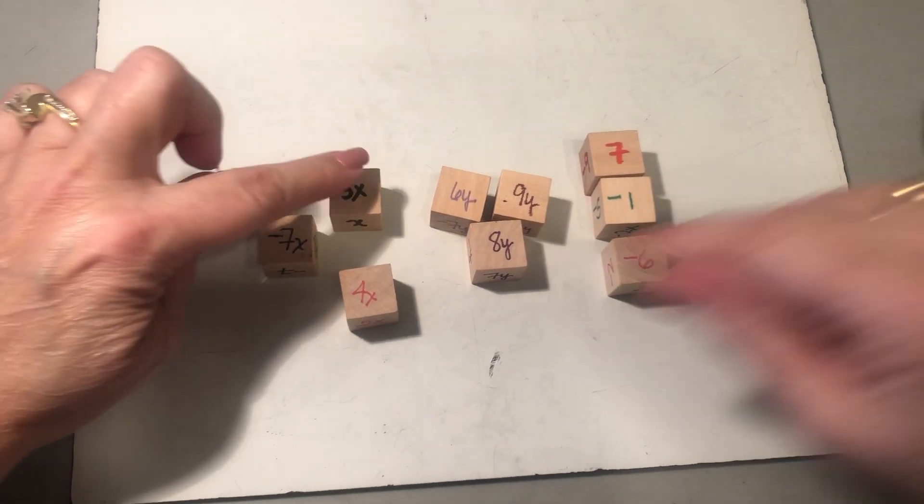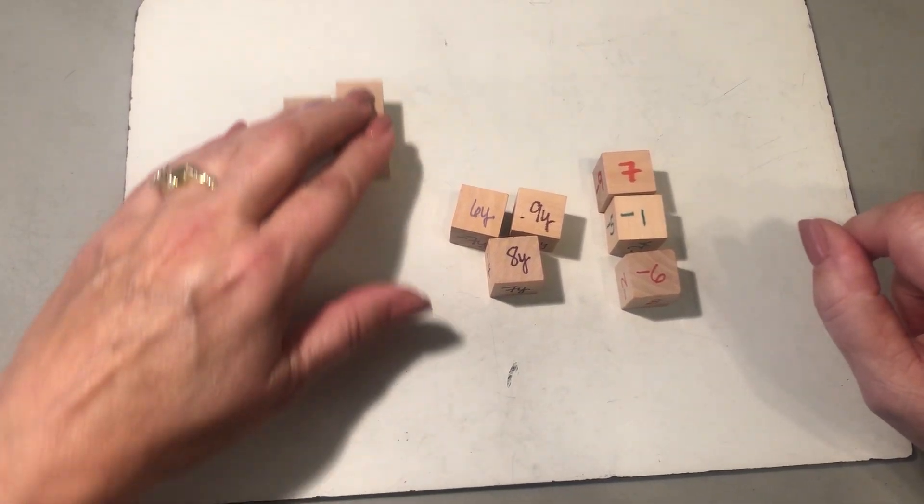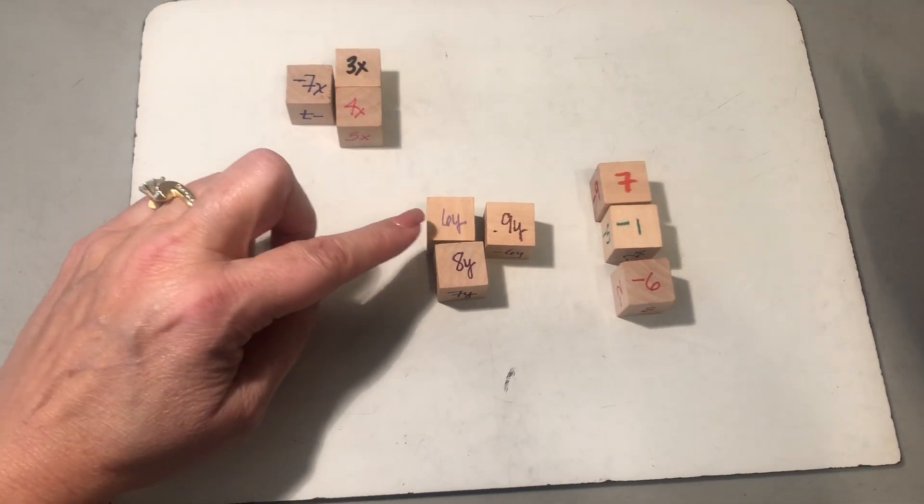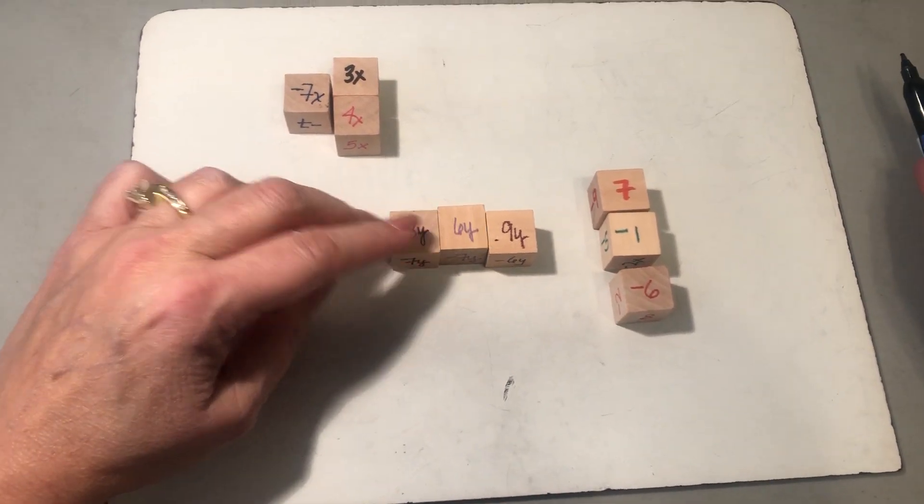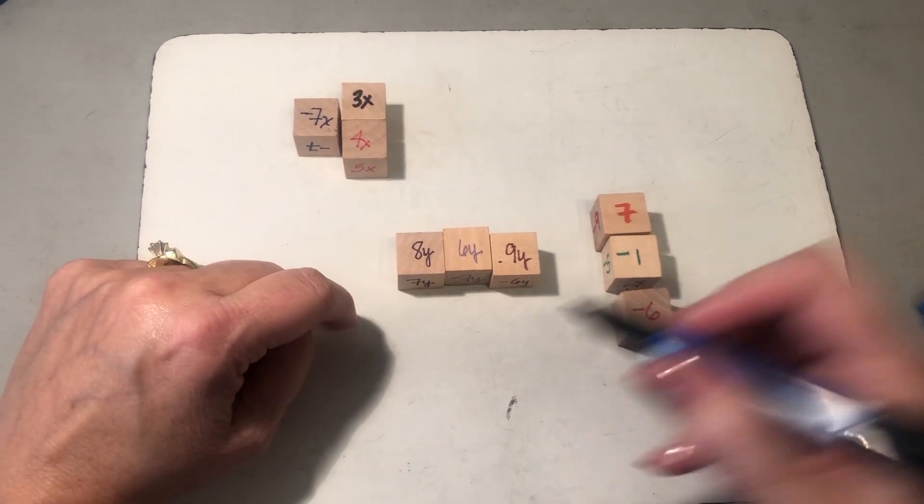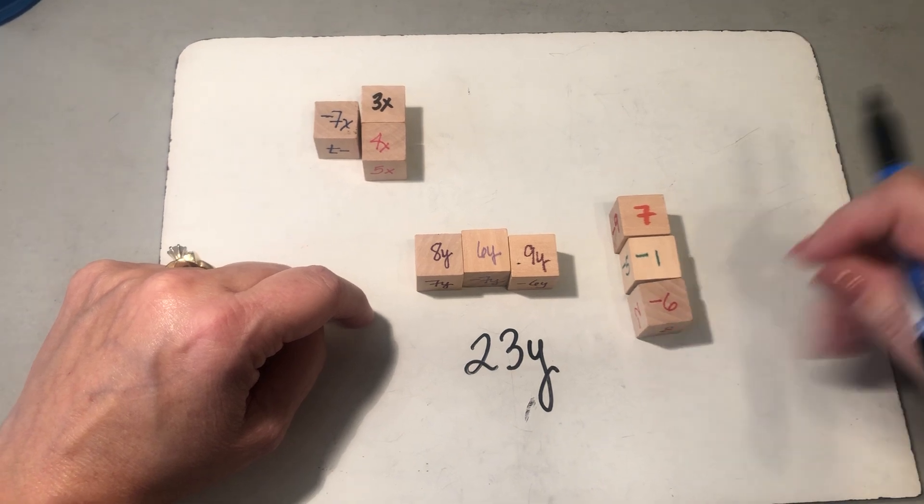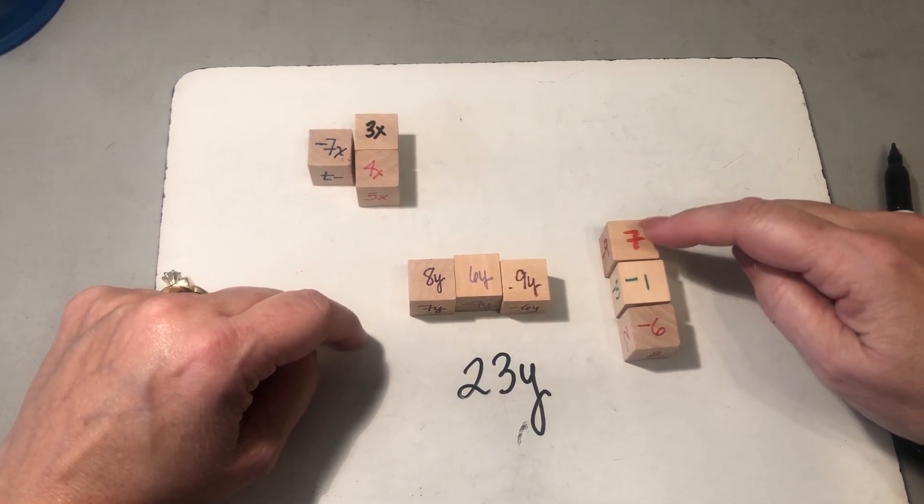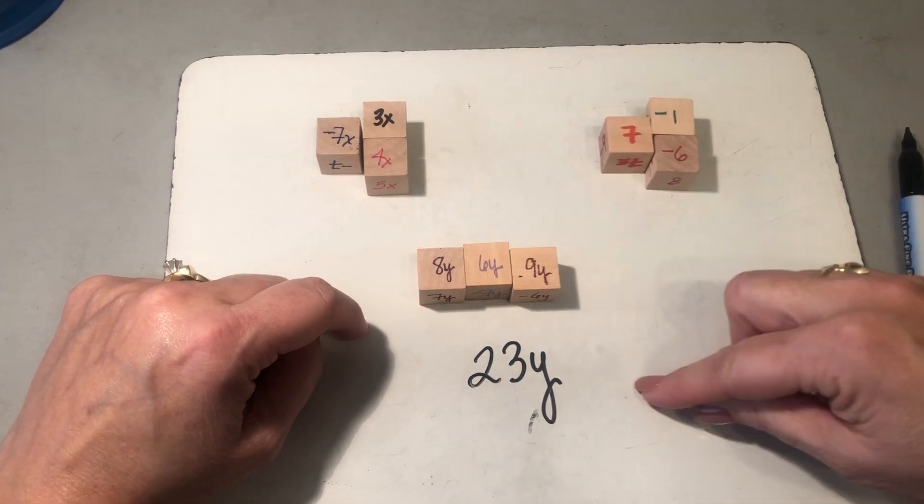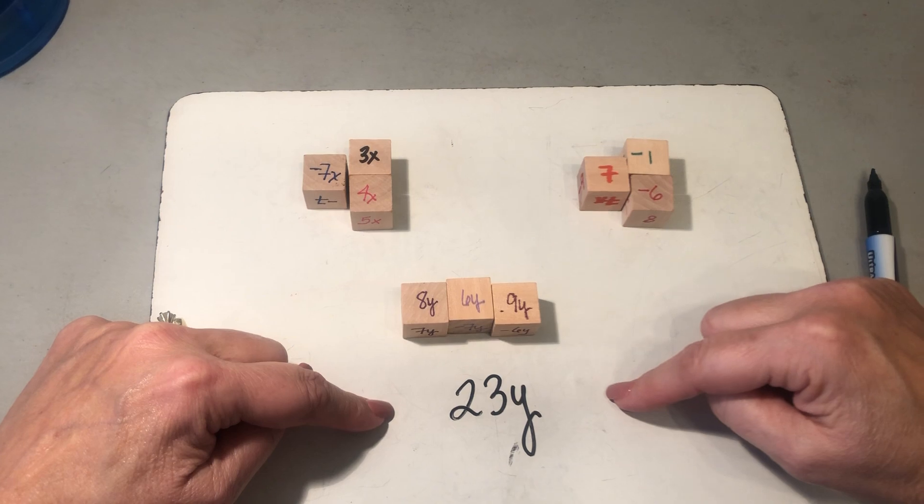Okay, 7 and negative 7, they're opposites, that's a zero pair. So I have no x's in this expression. Here I have all positive y's, 8, 6, and 9. If I add all of that together I believe that's 23y. And then here I have negative 7 and positive 7, once again a zero pair, leaving me that this whole expression simplifies down to just 23y.